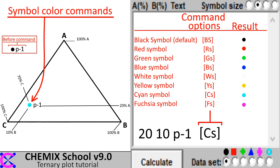To change the color of a symbol, enter a two letter color command enclosed in square brackets. The color options for symbols are the following: black, red, green, blue, white, yellow, cyan, and fuchsia.